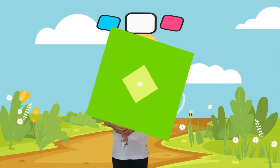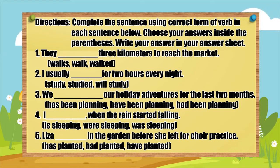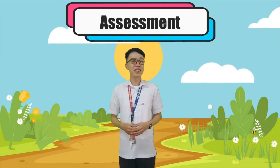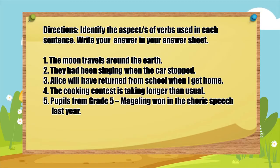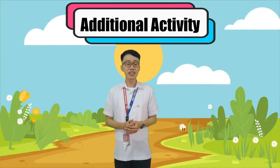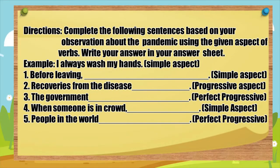Let's see how well you can do it. Complete the sentence using the correct form of the verb in each sentence below. Choose your answers inside the parentheses. Write your answer in your answer sheet. To assess our lesson for today, do this activity. Fighting COVID-19 is everybody's concern. Thus, as a pupil, you can also cooperate and share things to stop the spread of the coronavirus. For our additional activity, complete the following sentences based on your observation about the pandemic using the given aspect of verbs. Write your answer in your answer sheet. Example: I always wash my hands — in simple aspect. Here are the key answers.